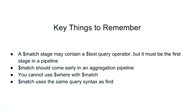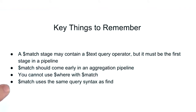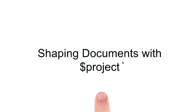And that's it for match. Think of match as more of a filter than a find. Once documents are in an aggregation pipeline and we're shaping them with new fields and new data, we'll be using match heavily to keep filtering documents out. Key things to remember: a match stage may contain the $text query operator but it must be the first stage in a pipeline; match should come early; you cannot use $where with match; and match uses the same query syntax as find. The next stage we'll learn about is project — like match, it is a vital stage to thoroughly understand.